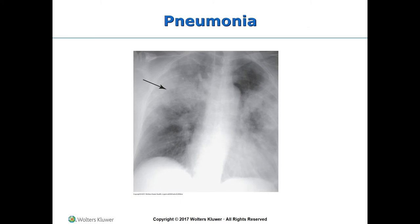On chest X-rays, lung fields should appear radiolucent — dark — but in pneumonia you see white, opaque patches indicating inflammation. An arrow may indicate lobar consolidation, but in general, white patchy areas throughout suggest an inflammatory process. Bilateral pneumonia, as may be seen in this example, is particularly serious.